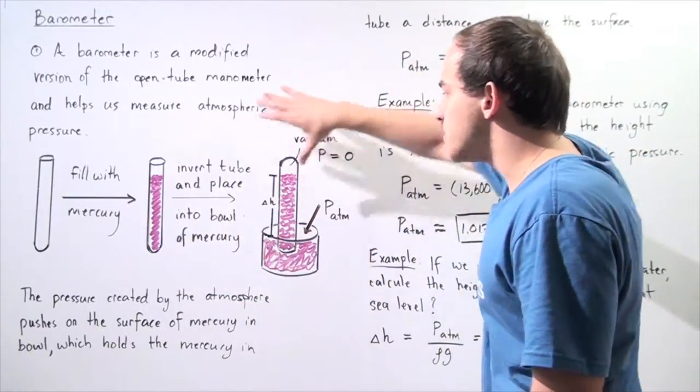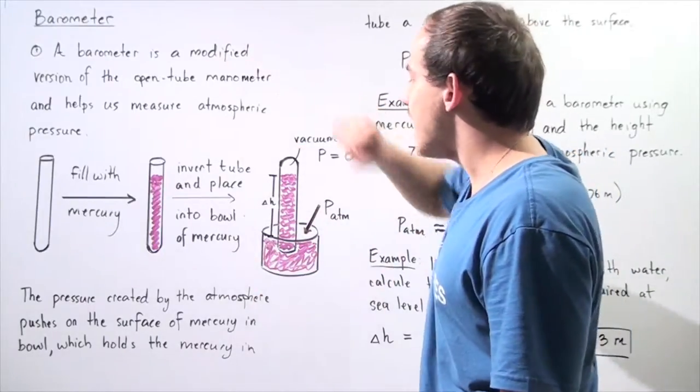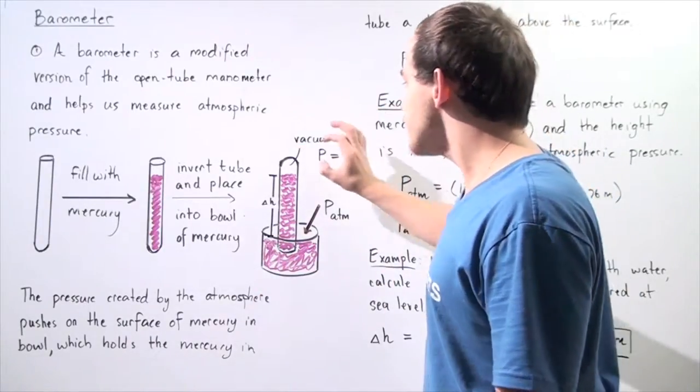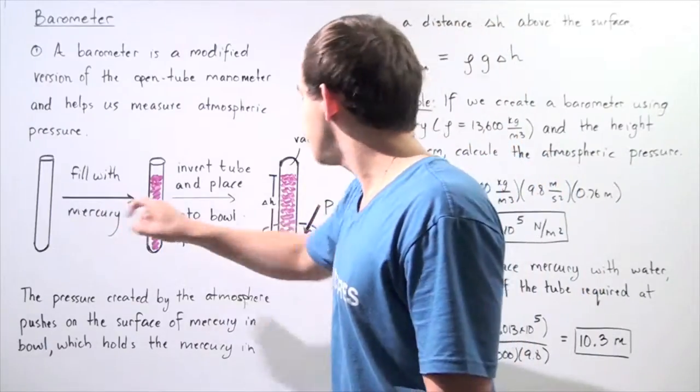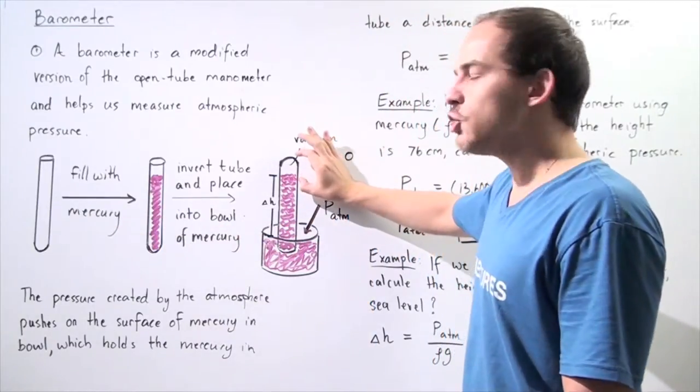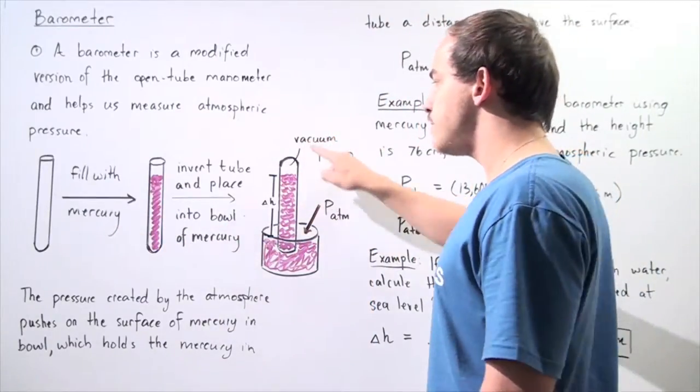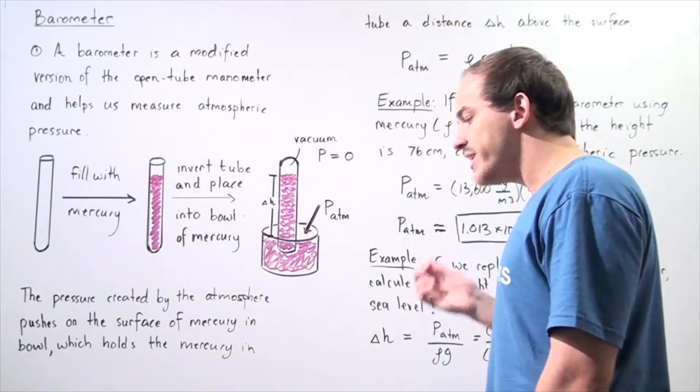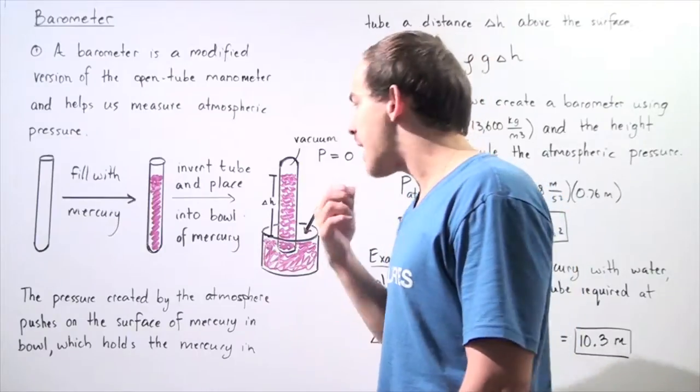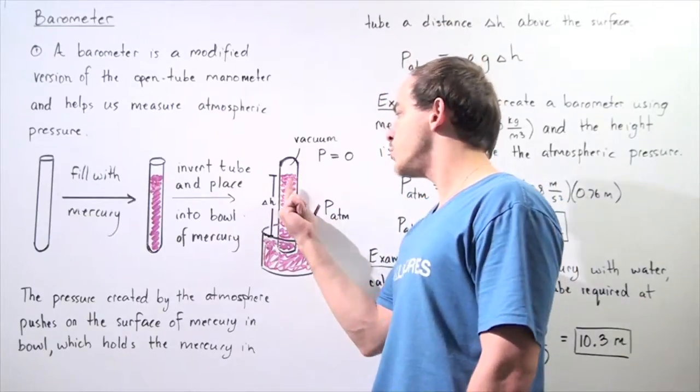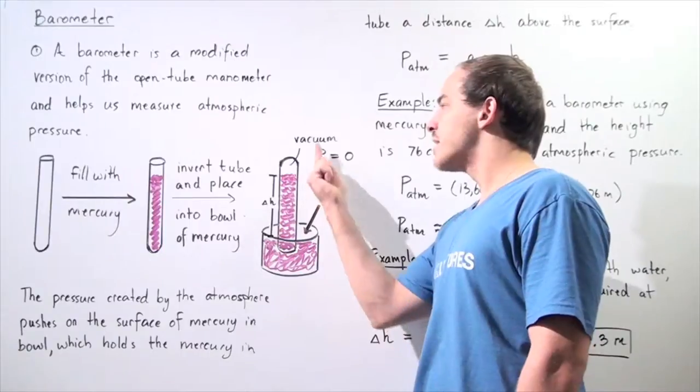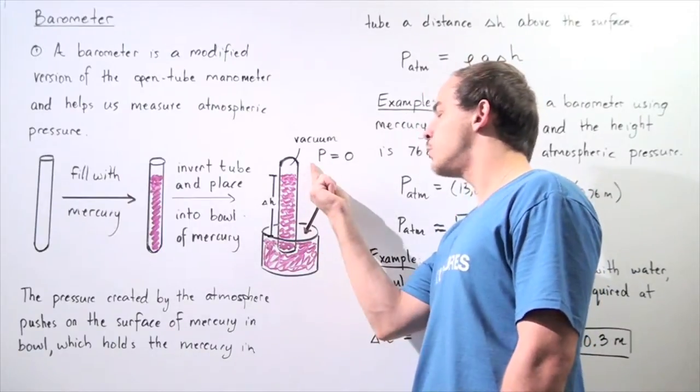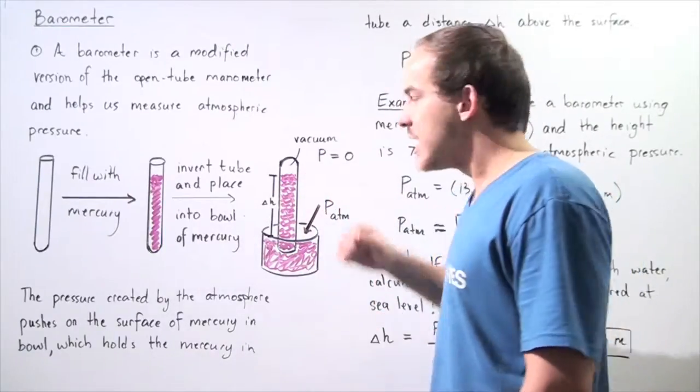So we get the following result and this instrument is known as a barometer. Notice that at the top of our tube, we have a vacuum that's created. An empty space is created at the top and as long as we neglect a type of evaporation that takes place between the mercury and the space, we assume that this is a vacuum and the pressure must be zero.